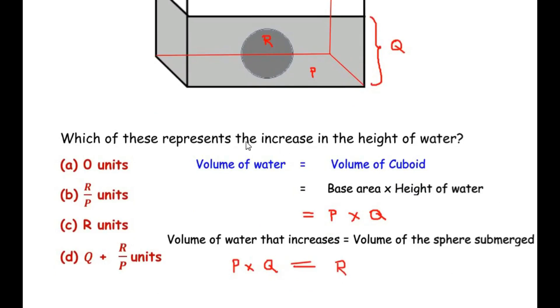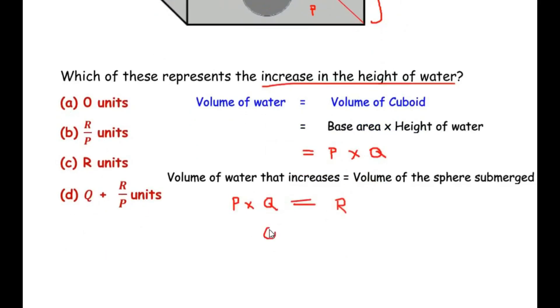Now, since they want us to find out what is the increase in the height of water and Q represents the height of the water, we are going to write Q is equal to R taking P on the other side of equal to sign, we get R divided by P units. So the increase in the height of the water is equal to R over P.